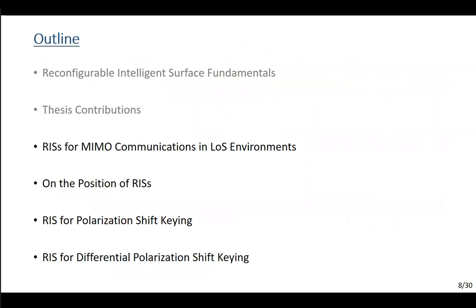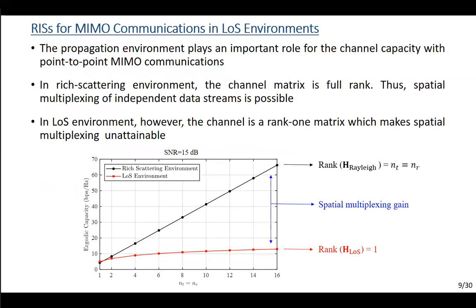Now I will speak about our first paper, Paper A: RIS for MIMO communications in line-of-sight environments. In point-to-point MIMO communication, the propagation environment has an important role on the channel capacity achieved. In the case of a rich scattering environment, channel entries are commonly modeled as independent and identically distributed Rayleigh fading. At this moment the channel matrix becomes full rank, which means spatial multiplexing of independent data streams from different transmit antennas at the same time and frequency becomes possible, resulting in substantial capacity gains.